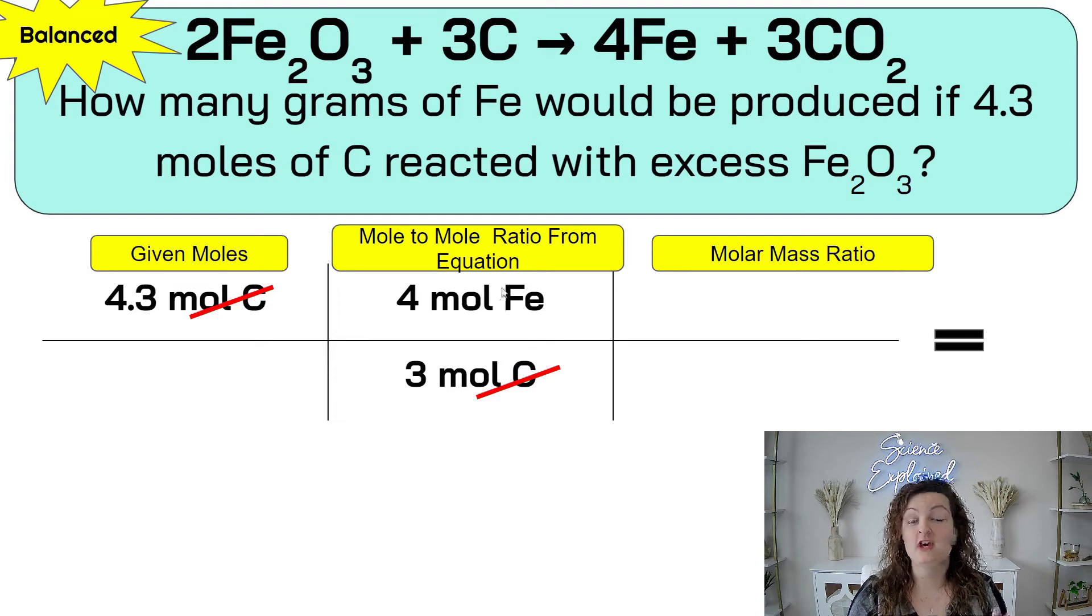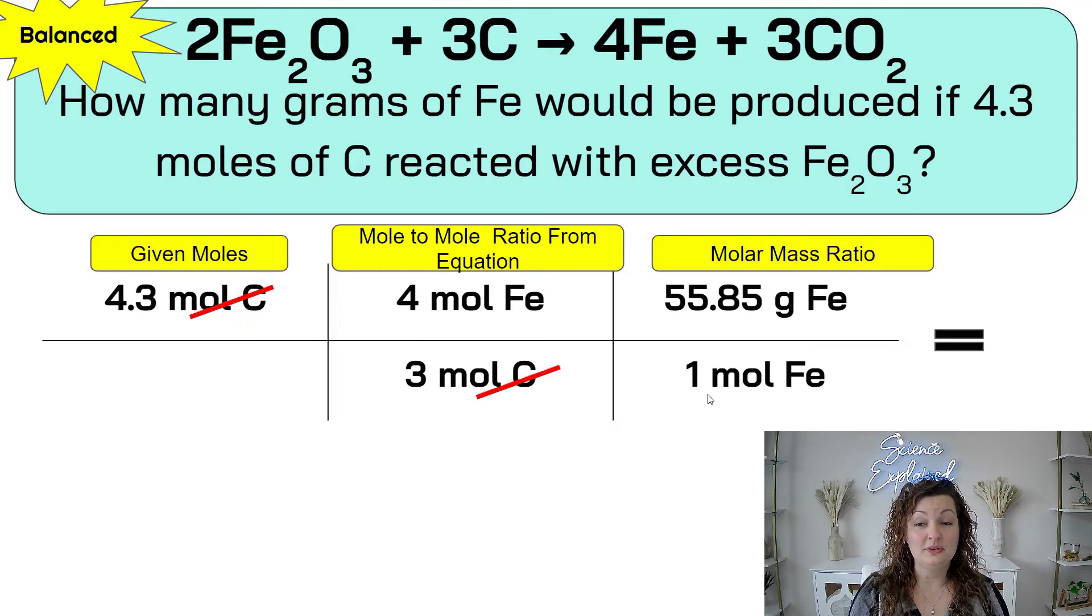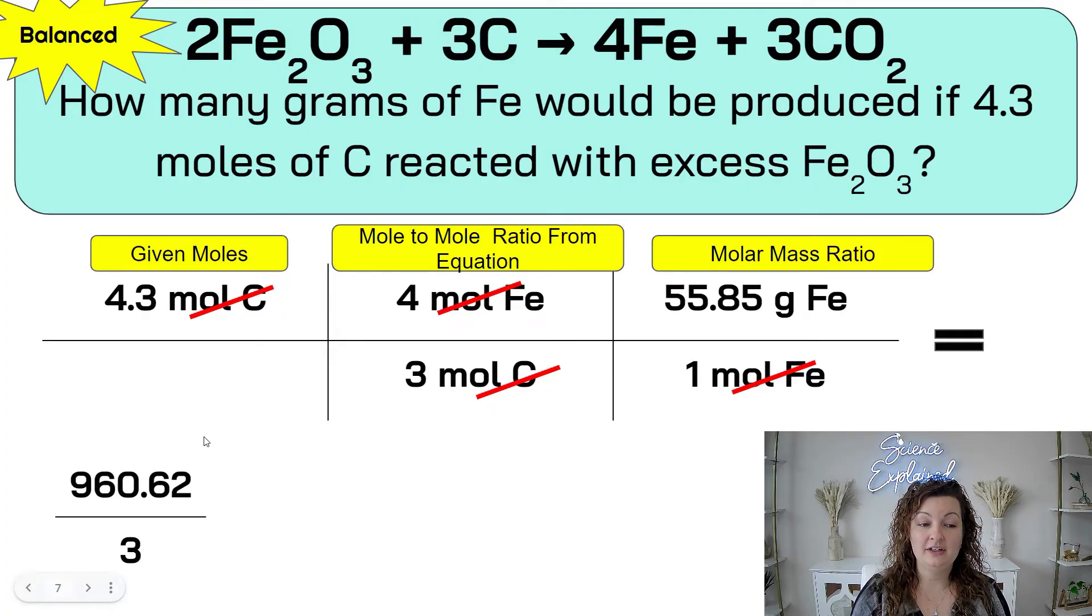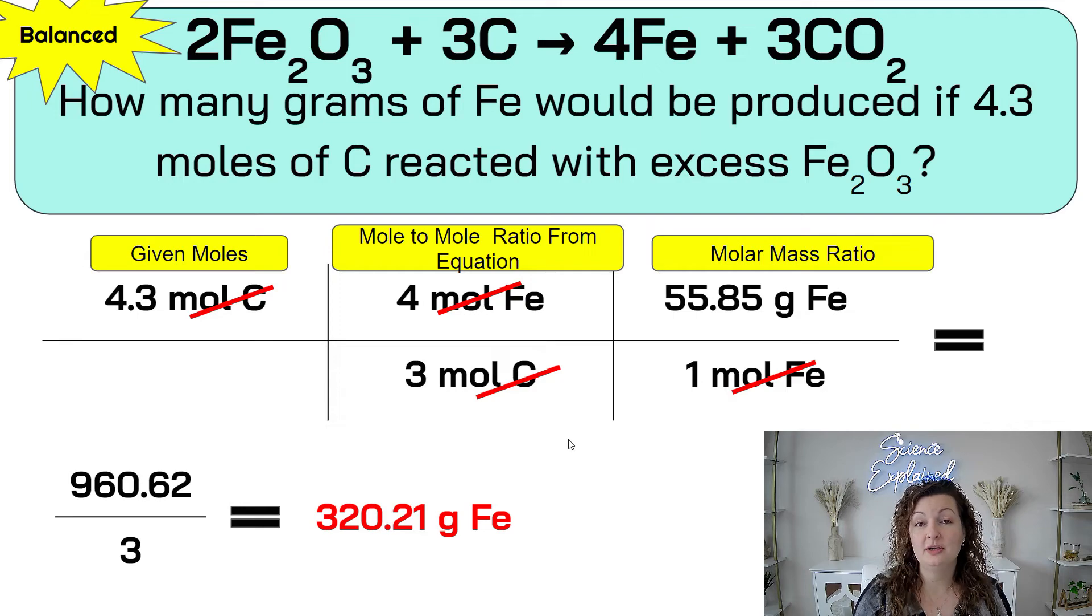Now we can go ahead and just change moles of Fe to grams of Fe, which is what our problem asks for. How many grams of Fe? That's going to go right here, grams of Fe. Diagonal down is going to be moles of Fe. So we know that one mole of Fe equals the molar mass from the periodic table, which is 55.85 grams. Go ahead, cancel your units, and multiply the top. You get 960.62. Multiply the bottom, which is just three. Divide it in your calculator, and you end up getting 320.21 grams of Fe.